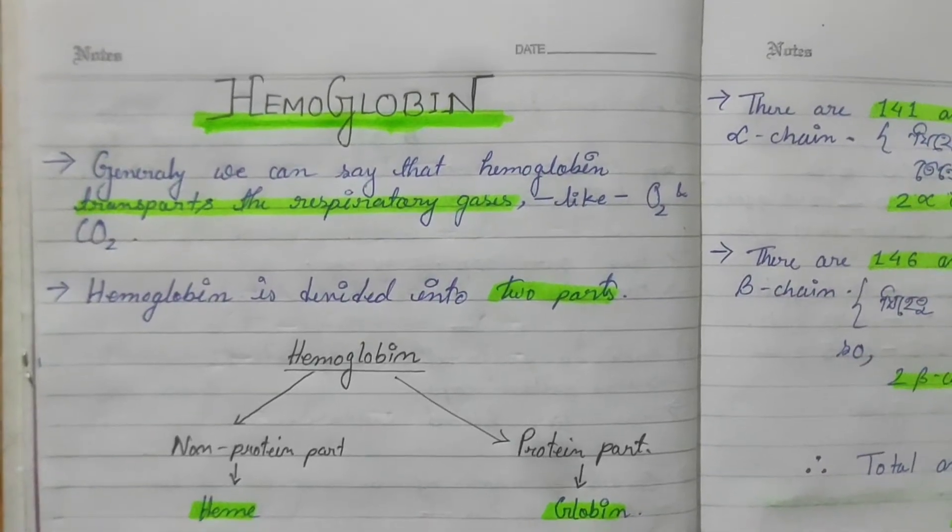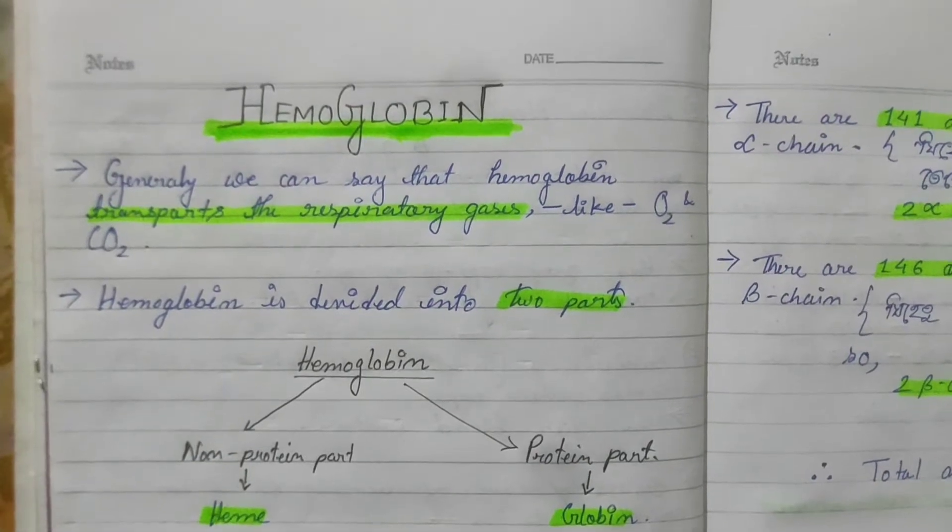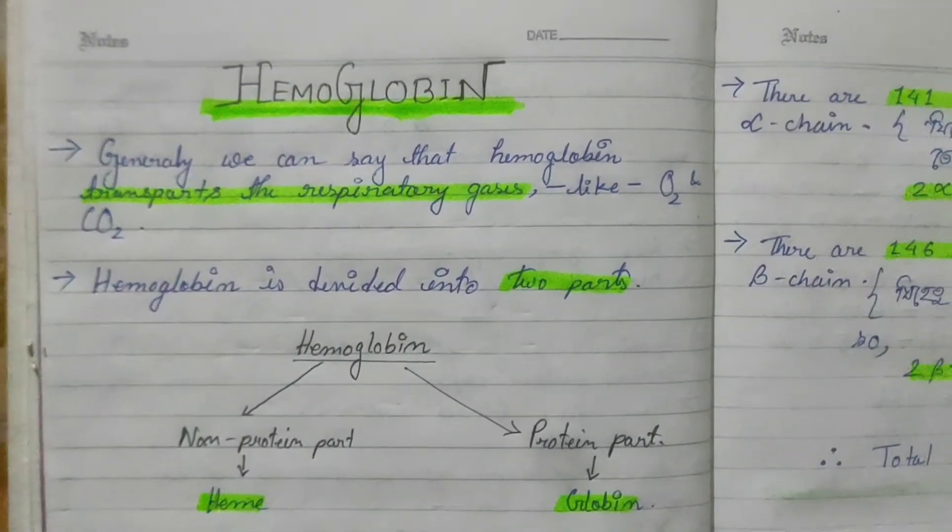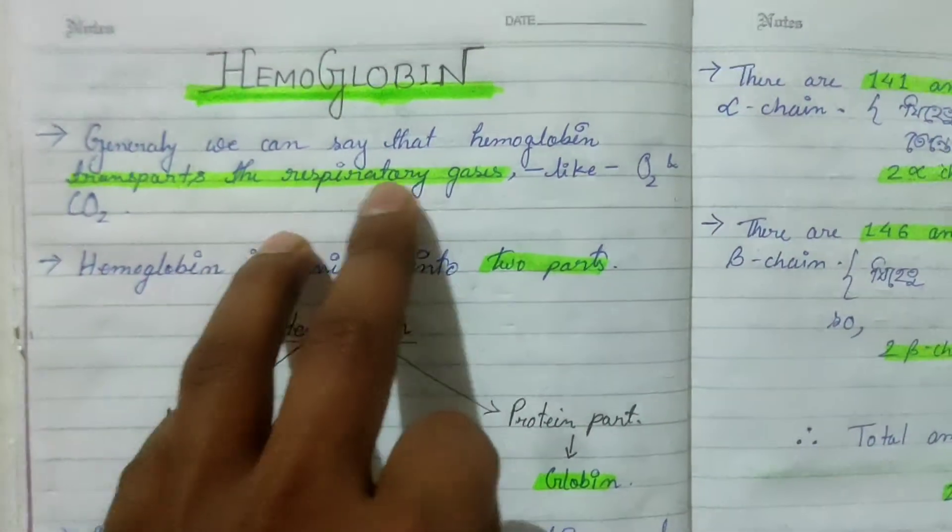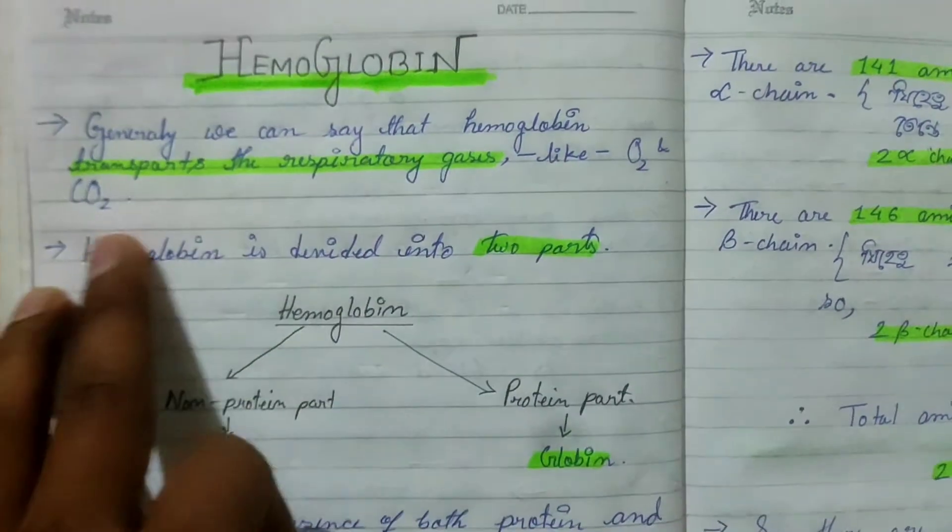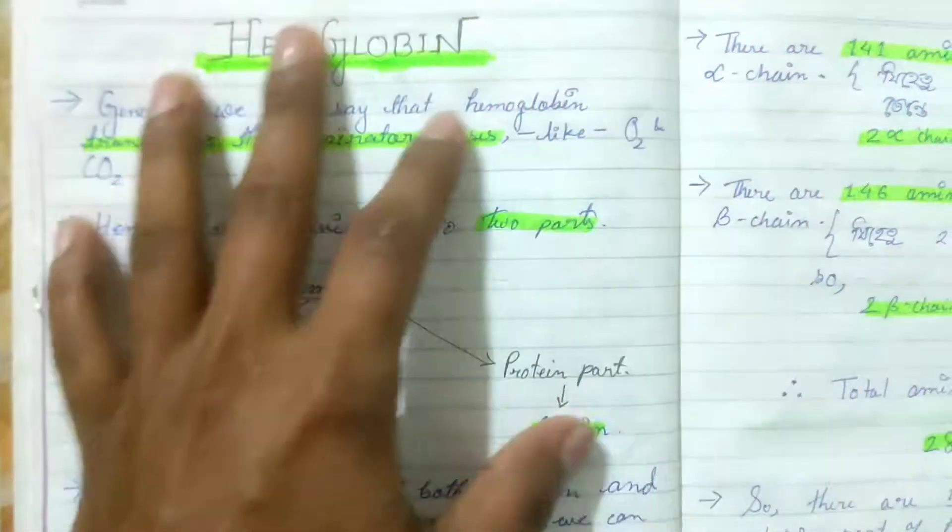Hello friends, I am Mr. Profes and today I am going to talk about hemoglobin. What is hemoglobin? Generally we can say that hemoglobin transports the respiratory gases like oxygen and carbon dioxide.